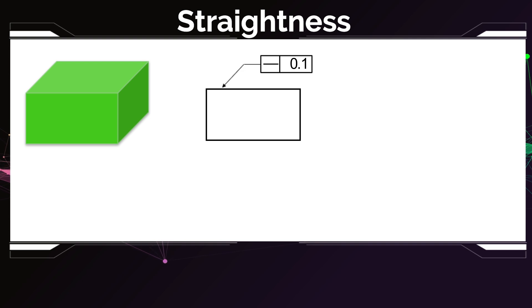So the straightness of this feature has to be 0.1. So we pointed at this line here, which means it's a line on this surface.